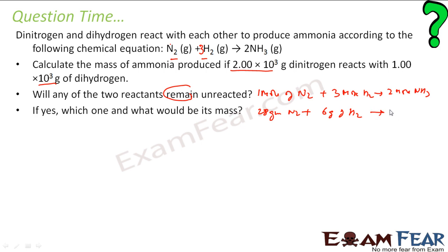28 grams of N₂ reacts with 6 grams of H₂ to give 34 grams of NH₃ (since NH₃ = 14 + 3 = 17, and 2×17 = 34). We are given 2 kg of N₂ and 1 kg of H₂. From the reaction ratio: 28 grams of N₂ requires 6 grams of H₂, so 1 gram of N₂ requires 6/28 grams of H₂.